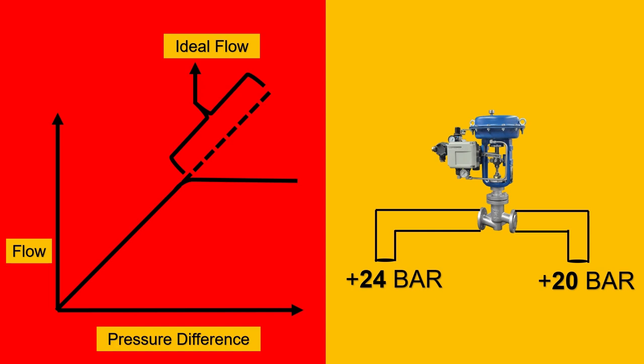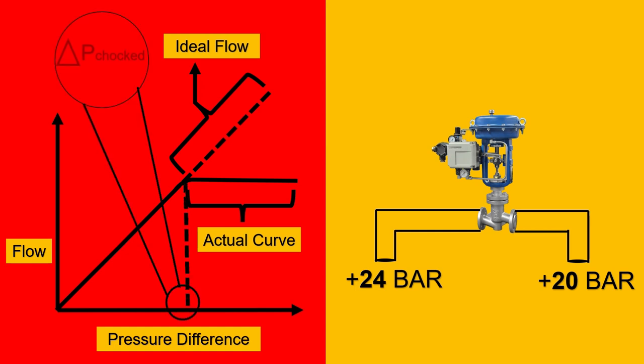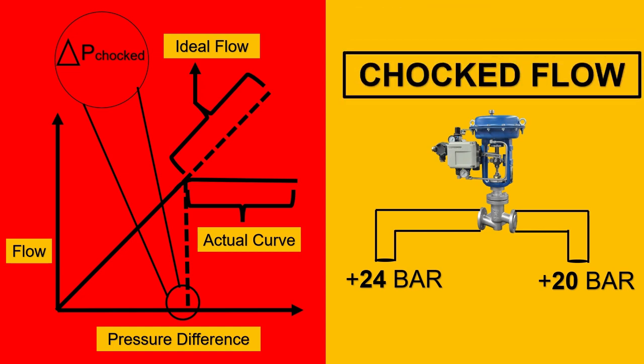But the ideal flow characteristics don't work as we saw in the electrical circuit as well. This point is the actual curve where the flow will not increase even though we increase the differential pressure across it. This phenomenon happens at a point where we call as the del p choked or the choked flow value beyond which even if you increase the pressure drop, there is going to be no increase in the flow and this phenomenon is called as choked flow.